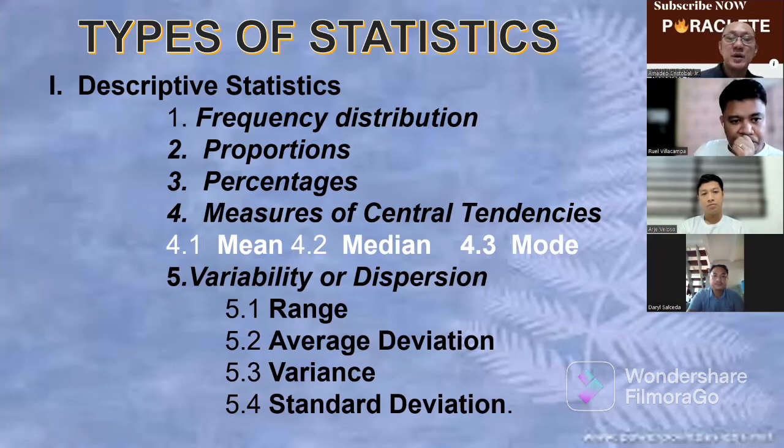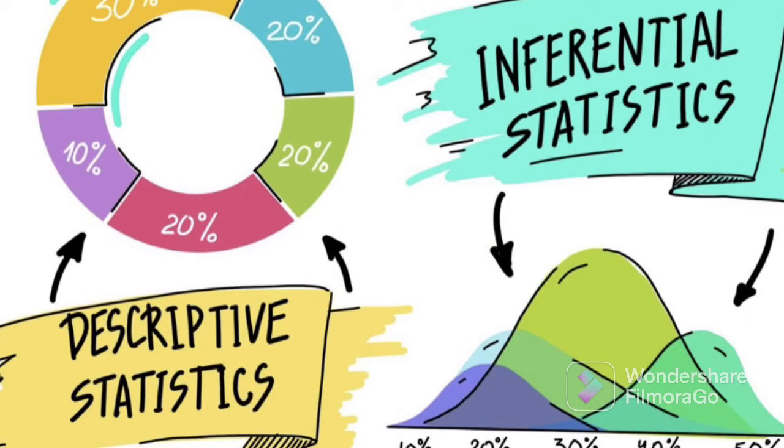Quantitative research will be more on the description. Of course, you can use the descriptive statistics. But if you're going to look into the higher levels, such as level two, the relationship, level three, which will tell you to do an experiment, then inferential statistics will be needed.